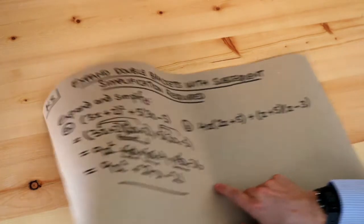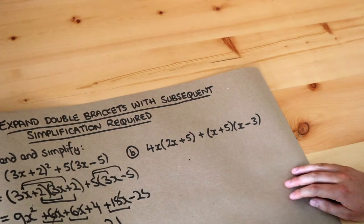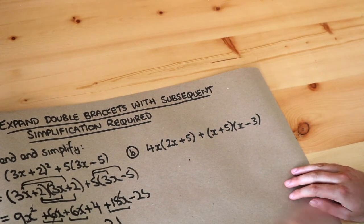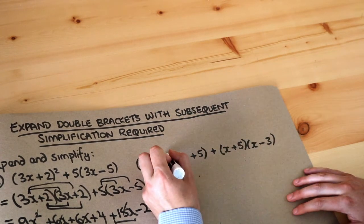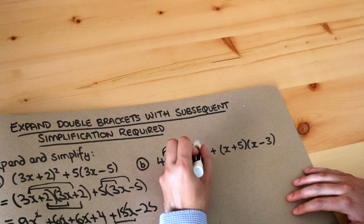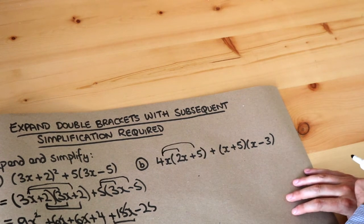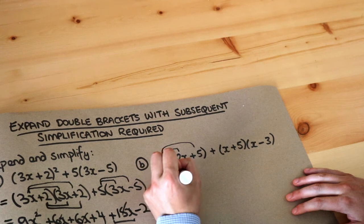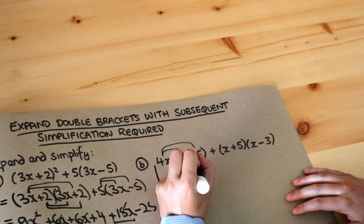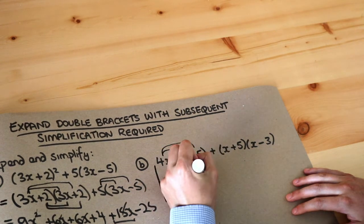Let's do the second one. Again we just expand out all the brackets first and then we can simplify it. So single bracket expansion here. We do the 4x multiplied by each of the things inside the bracket. So 4x times 2x is 8x squared and the 4x times the 5 is 20x.